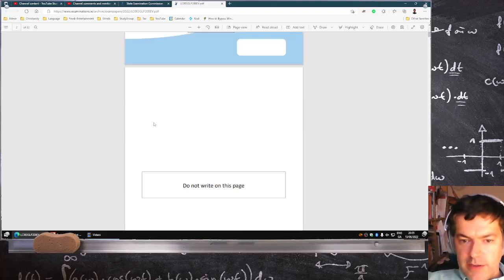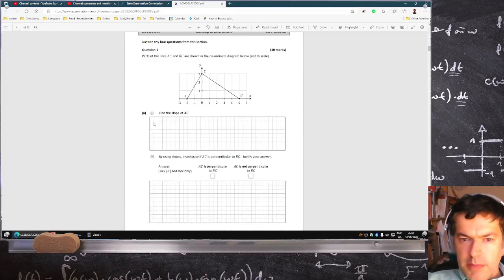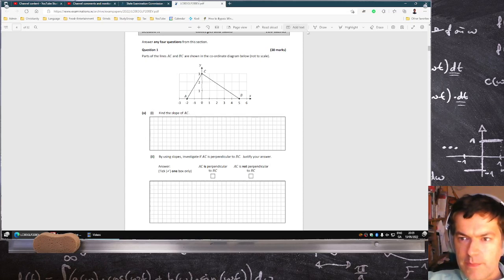Paper 2 time, ordinary level. Parts of the line AC and BC are shown in the coordinate diagram below. Find the slope of AC. AC is rise over run, 3 over 2.